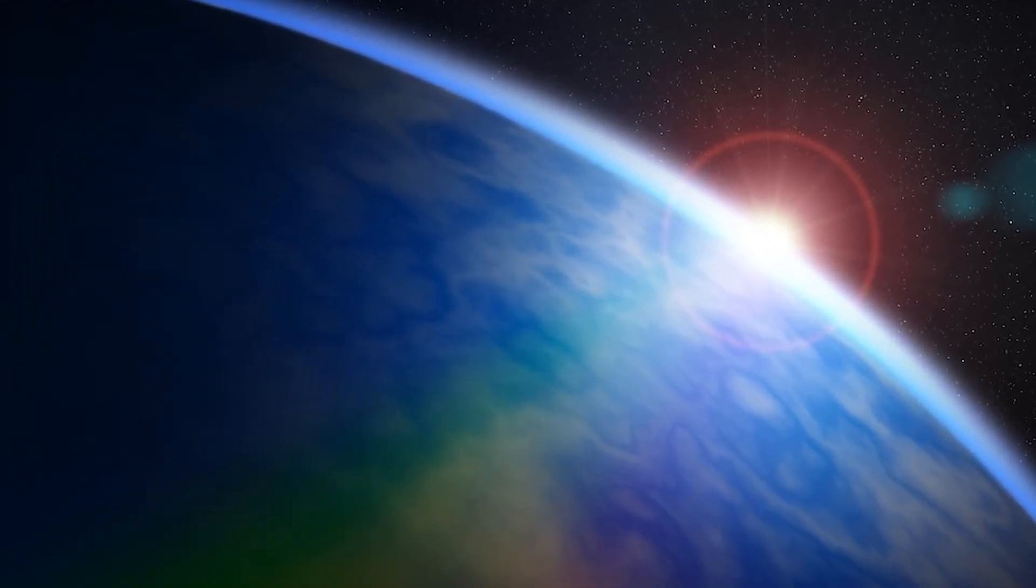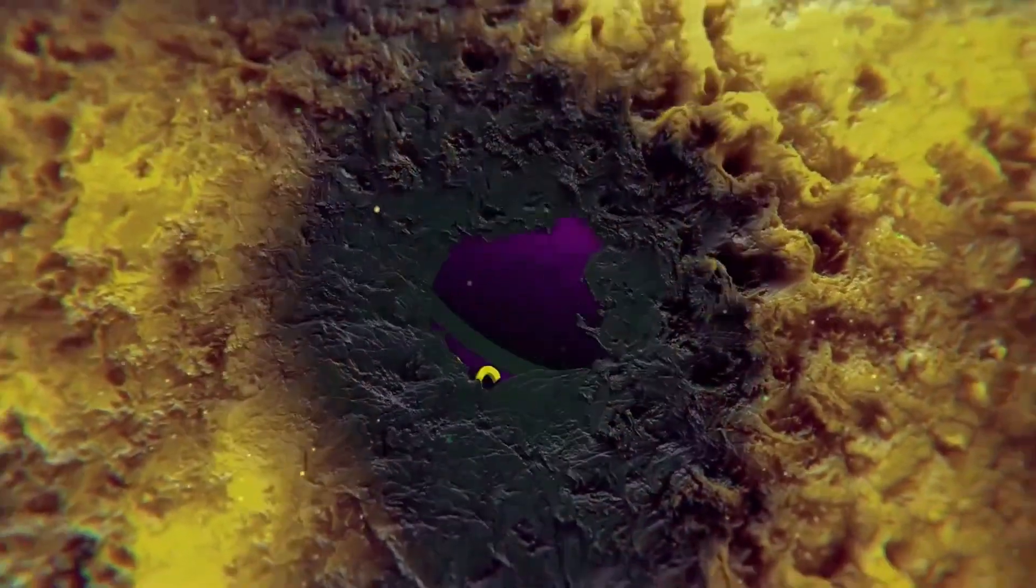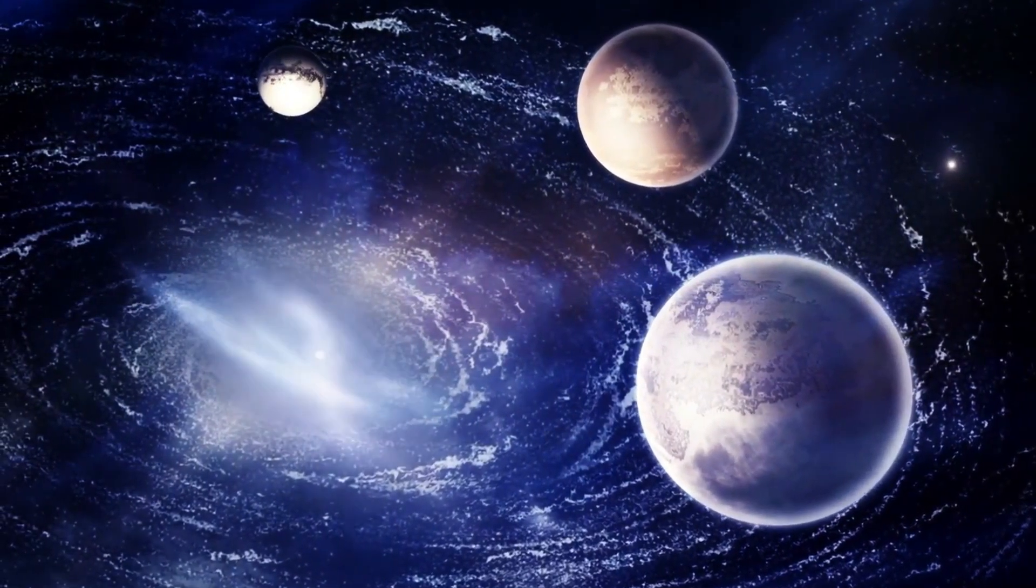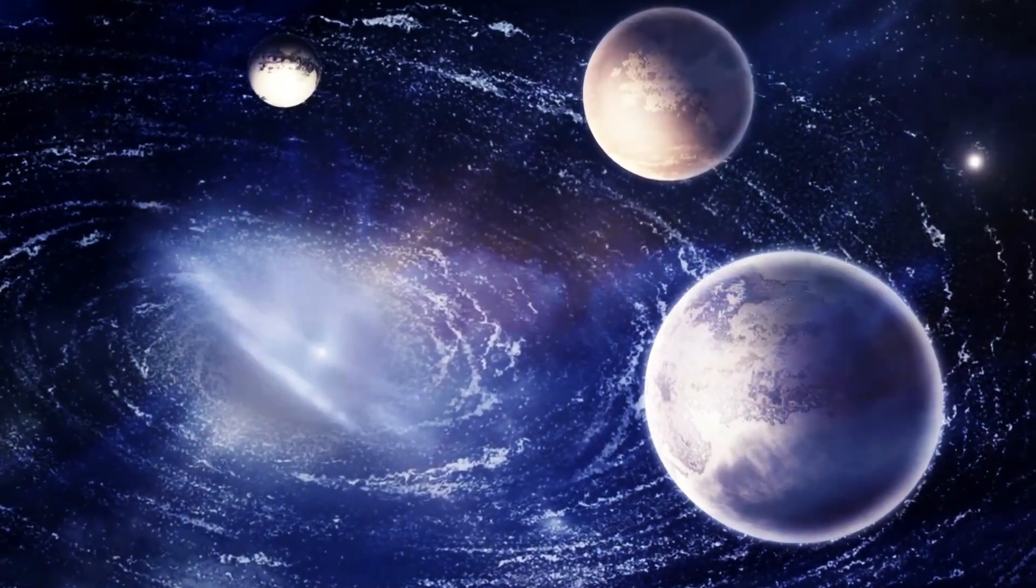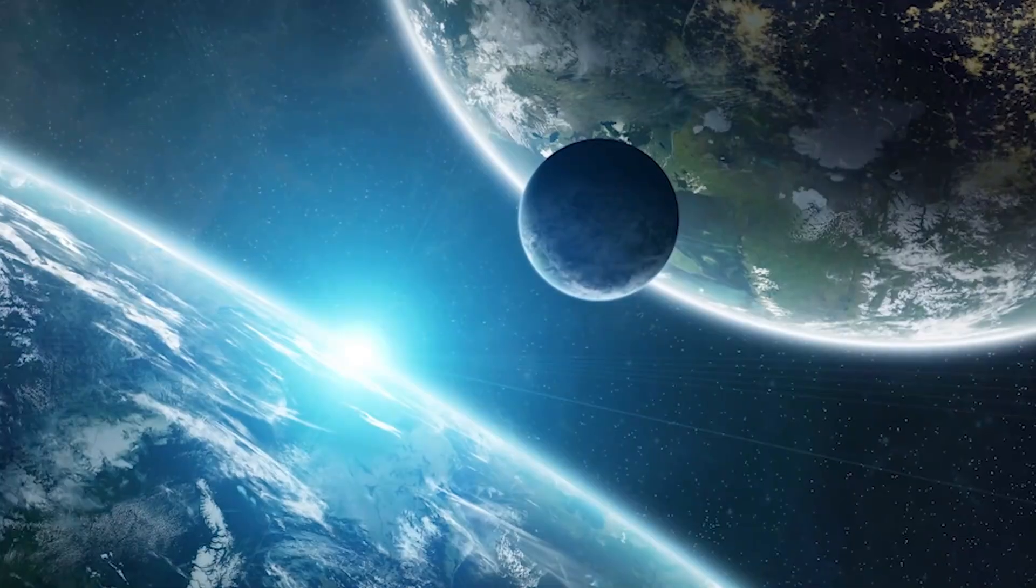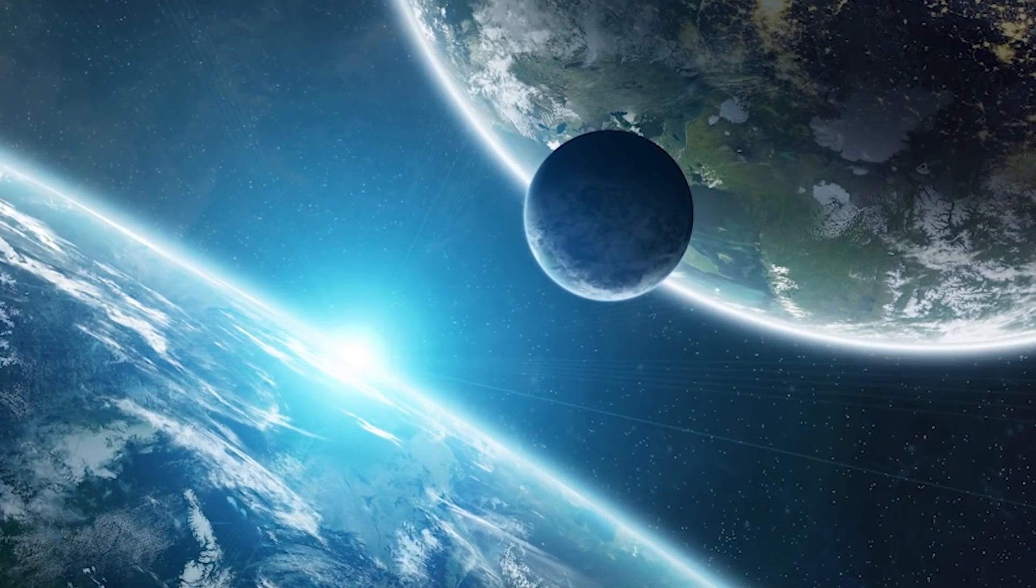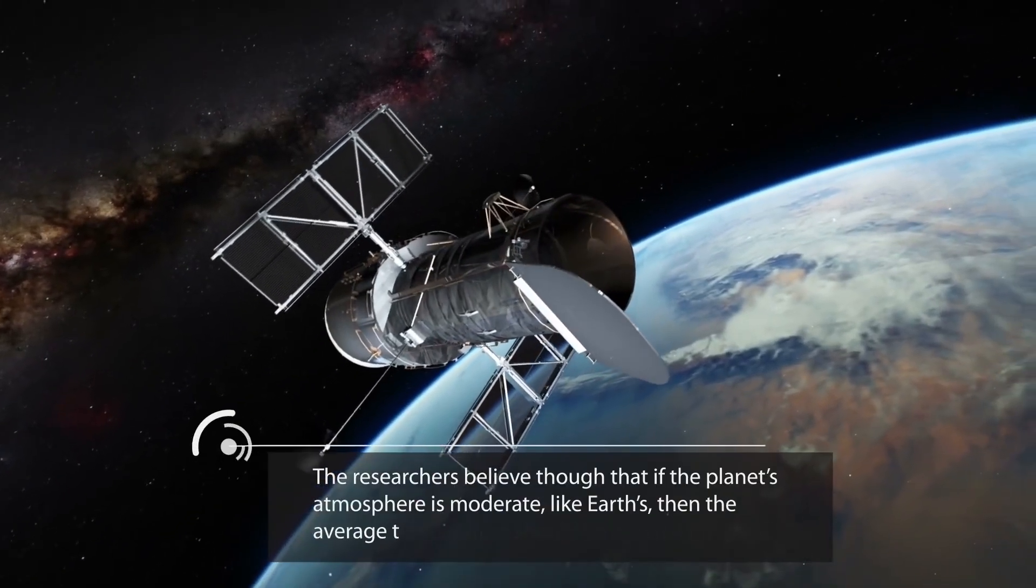For instance, one of the first exoplanetary systems ever discovered orbits a pulsar, a highly magnetized, rapidly rotating neutron star. These planets have withstood supernova explosions and intense radiation, showing that planetary survival can occur under the most extreme conditions.